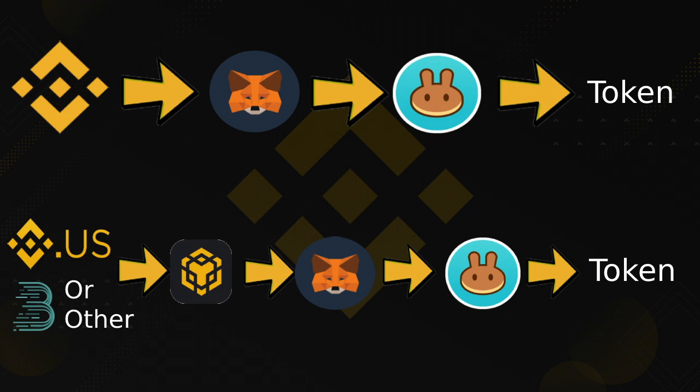If you're from outside of the United States and use the regular Binance app or website — not the Binance.US version — you can do the conversion from the Binance Chain to the Binance Smart Chain in-app on Binance and then send it directly to your MetaMask wallet. So this portion about the Binance extension you can skip. If you're coming from Binance.US, BitMart, or any other location, you'll need to send to the extension wallet, convert it, and that's how you'll fund your MetaMask account.